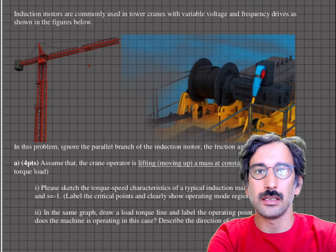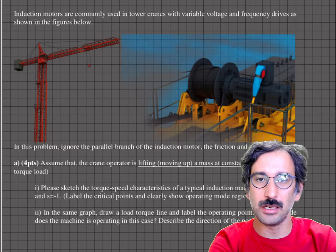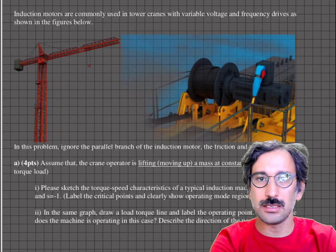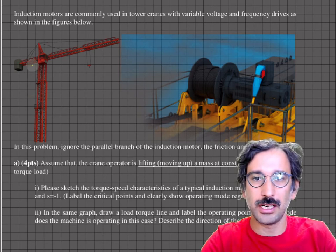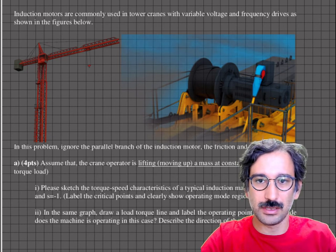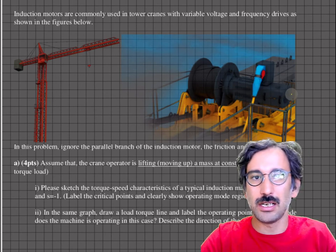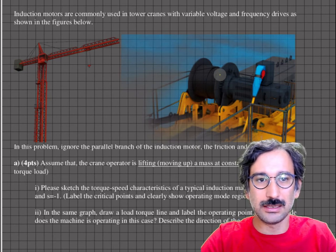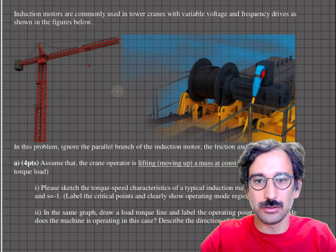In this video we will solve a past year's exam question about control of induction motors. The question features a tower crane, which is quite commonly used in industrial construction. Tower cranes are usually driven by AC motors with variable voltage and frequency drives. There is a drum that pulls the steel cable which carries the load.